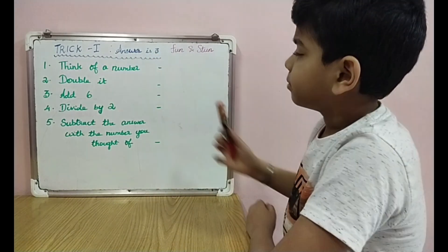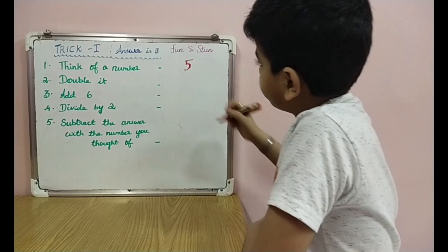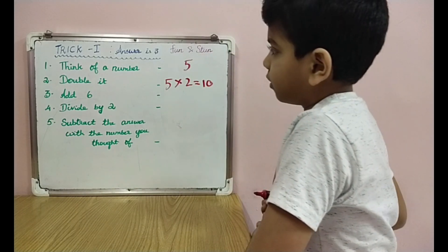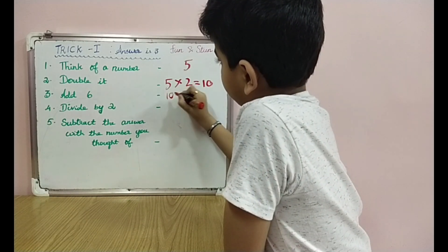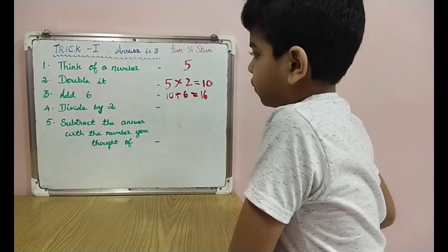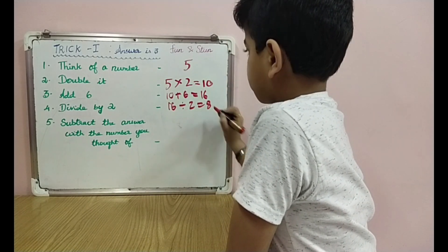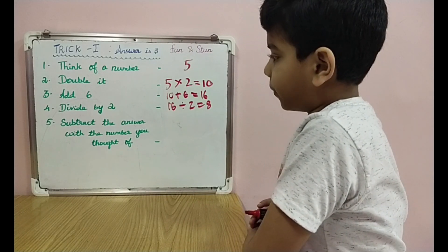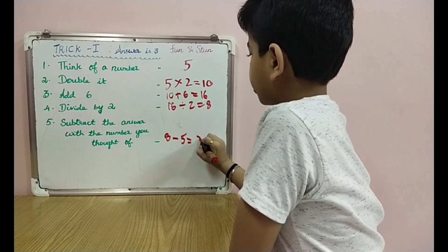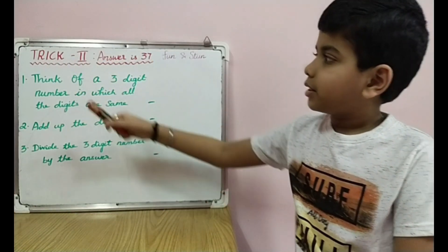Trick 1 — the answer is 3. Think of a number; I'm going to choose 5. Double it: 5 times 2 is equal to 10. Add 6: 10 plus 6 is equal to 16. Divide by 2: 16 divided by 2 is equal to 8. Subtract the answer with the number you thought of: 8 minus 5 is equal to 3.